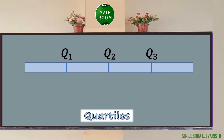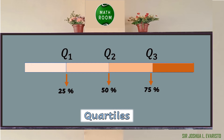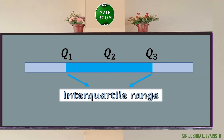As you can see, 25 percent of the distribution is below the first quartile, 50 percent of the distribution is below the second quartile, and 75 percent of the distribution is below the third quartile. The whole distribution is 100 percent. Moreover, the difference between Q3 and Q1 is what we call the interquartile range.